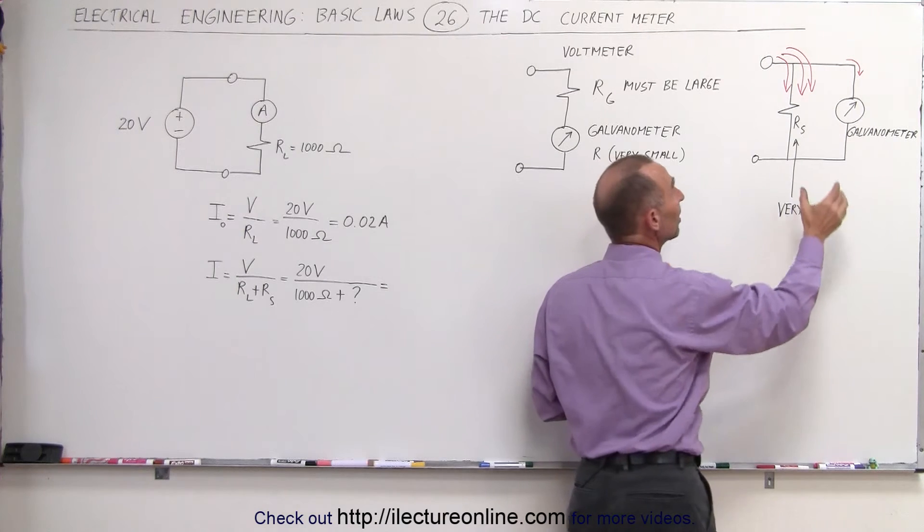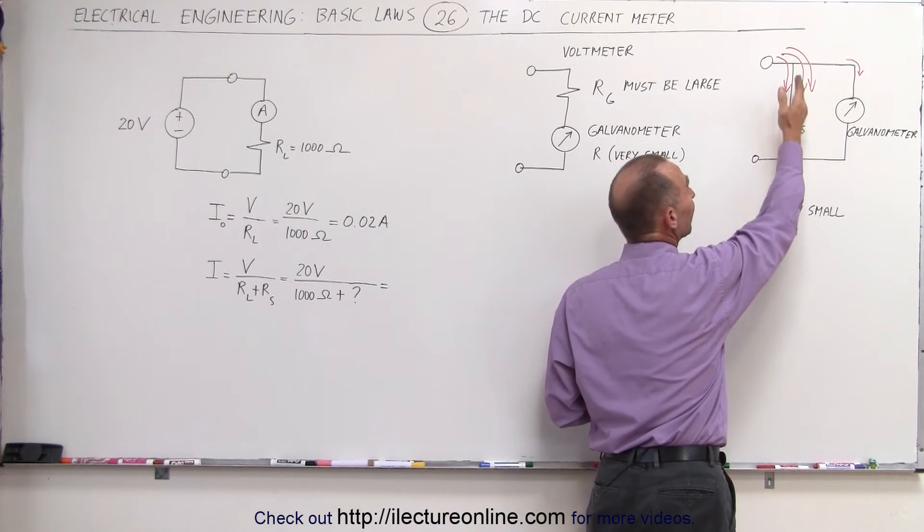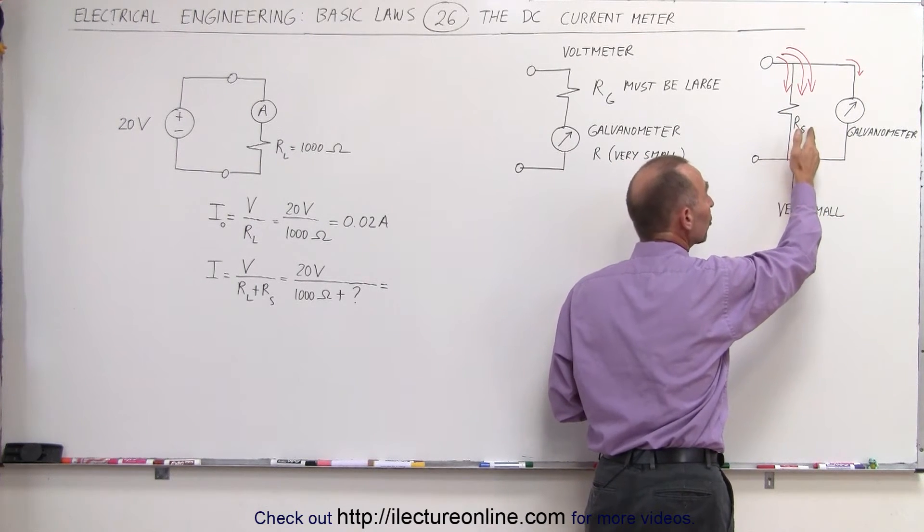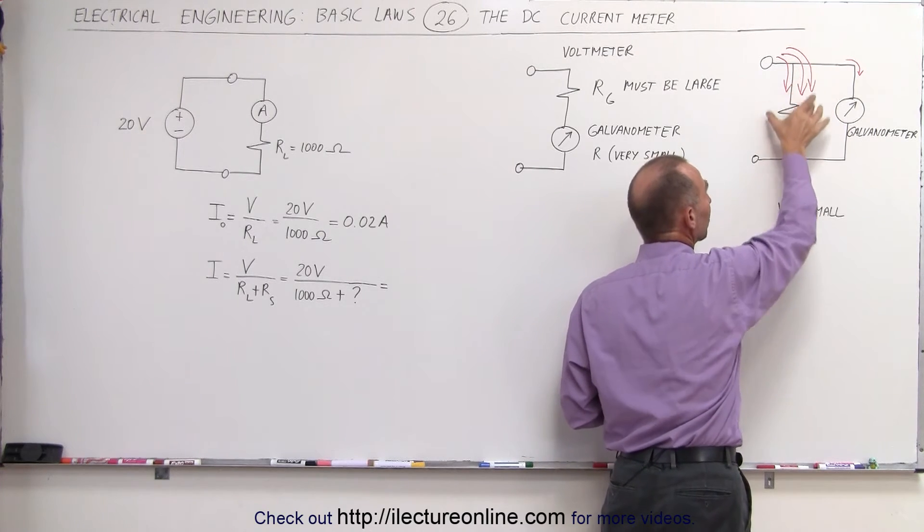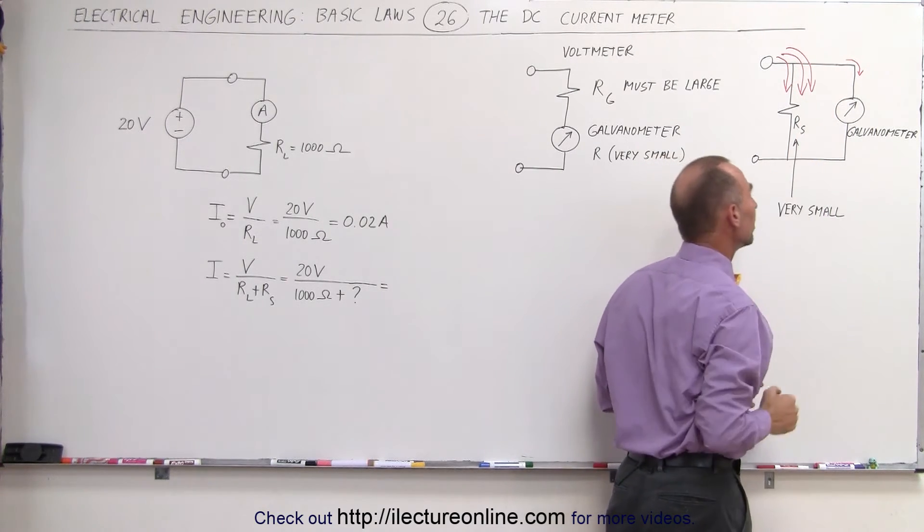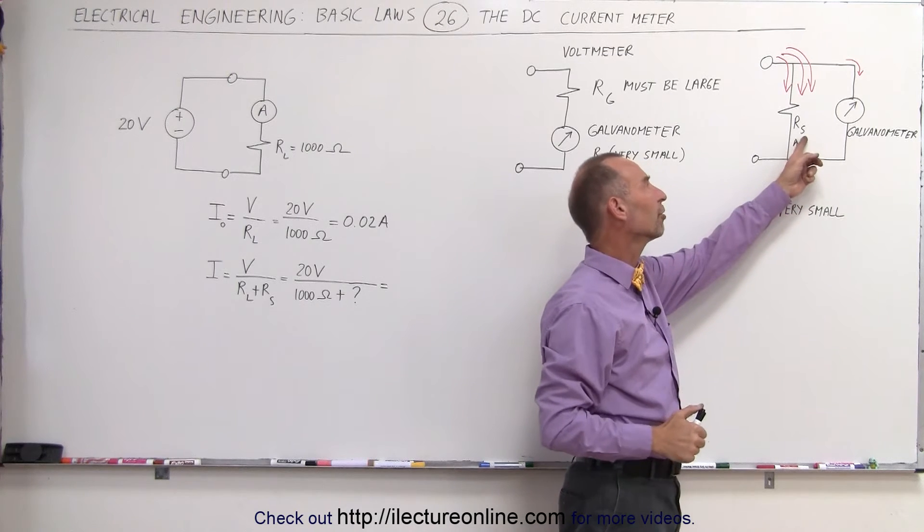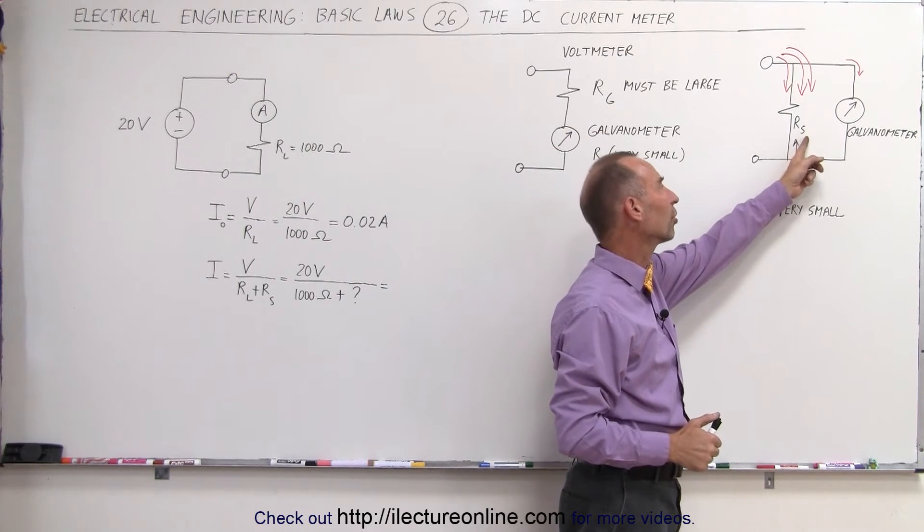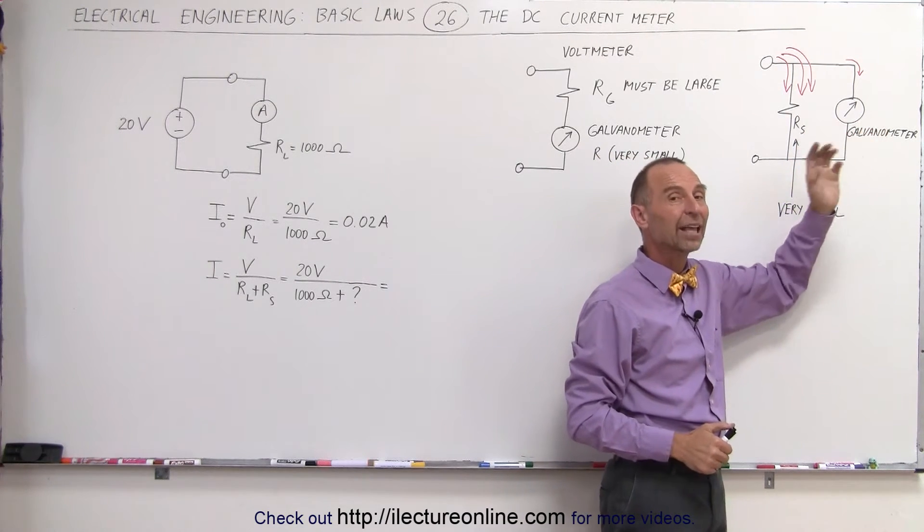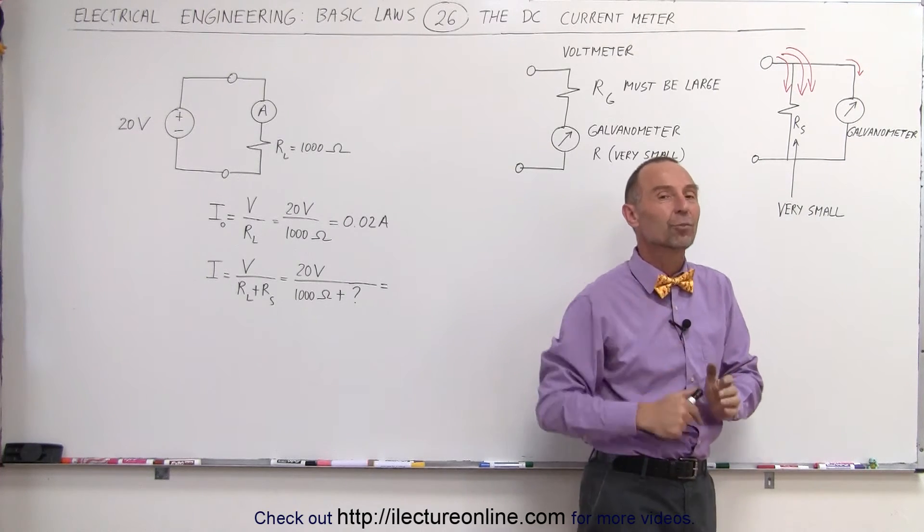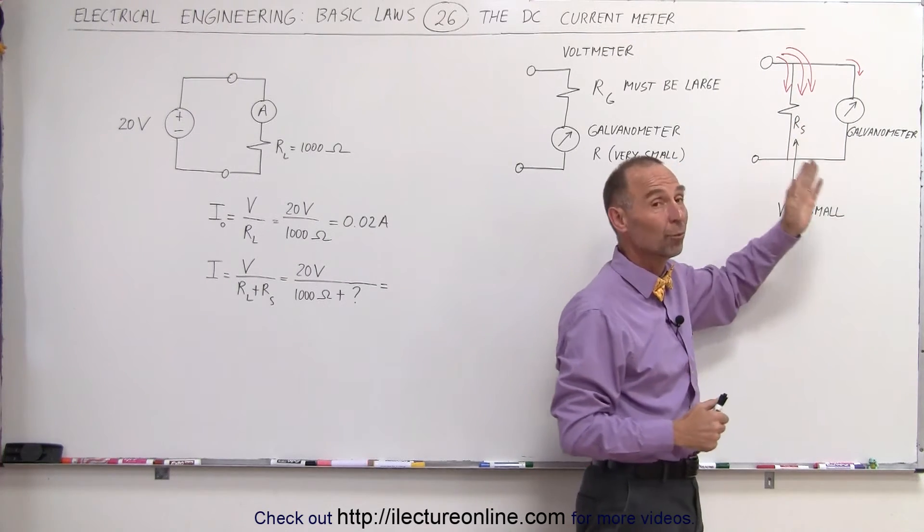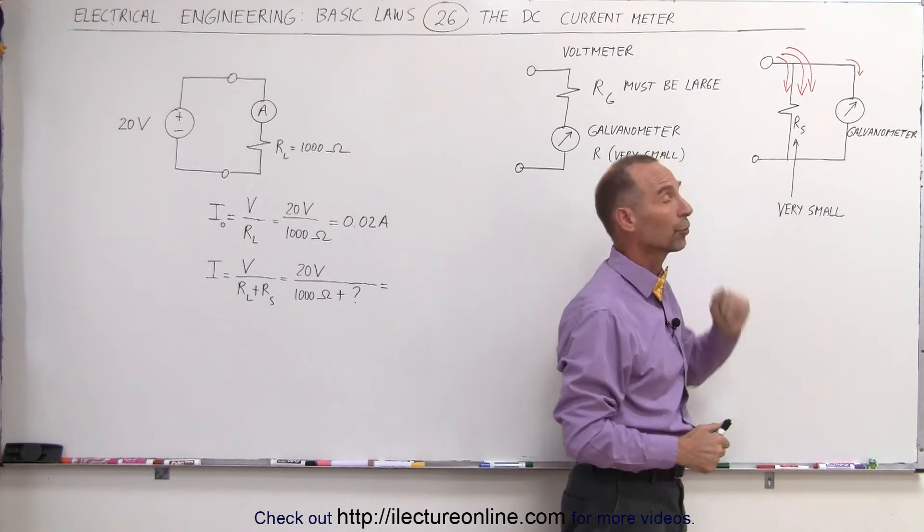So what you want to do instead is have a very, very small resistor in parallel. We call that the shunt resistor, which will draw the vast majority of the current running through the meter. You want that to be a very small number. You want the resistance of the shunt resistor to be much smaller than the resistance of the galvanometer, which in itself is already small. You just want it to be smaller, so most of the current will go through here.